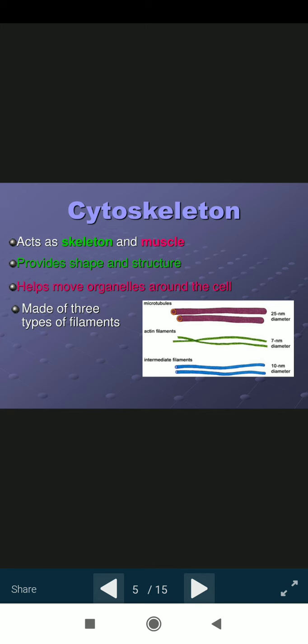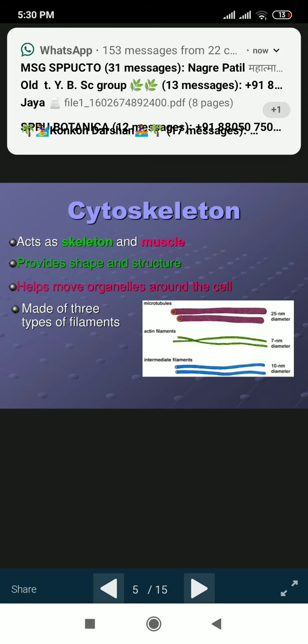Then, cytoskeleton acts as a skeleton and the muscles, just like the skeleton of our body. It builds the cell, provides shape and structure to the cell. The cells having different types, help move organelles around the cell, made of three types of filaments: microtubules, actin filaments, and intermediate filaments.